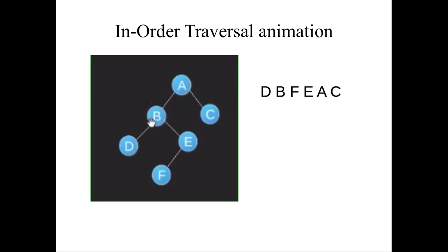A has B and C as its left and right subtrees. B has D as its left subtree and E as its right subtree. In in-order traversal, we visit the left subtree first, so we visit D. Then we go to the root node B. Next we move to the right subtree of B, which is E. E has a left child F, so we visit F first, then visit E as the root.